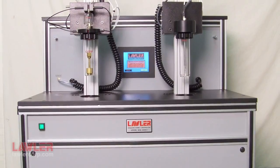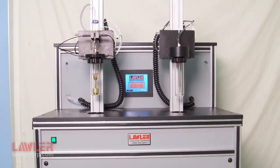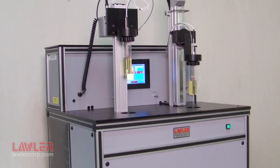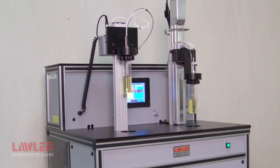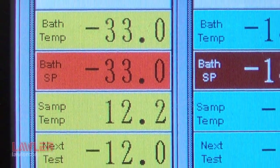In summary, the Lawler Directly Refrigerated Automated Cold Flow Properties analyzers have a common foundation of well-built refrigeration, robust control, easy-to-use color touch panels, and test method heads designed to mimic the manual test methods and allow visual verification of results.